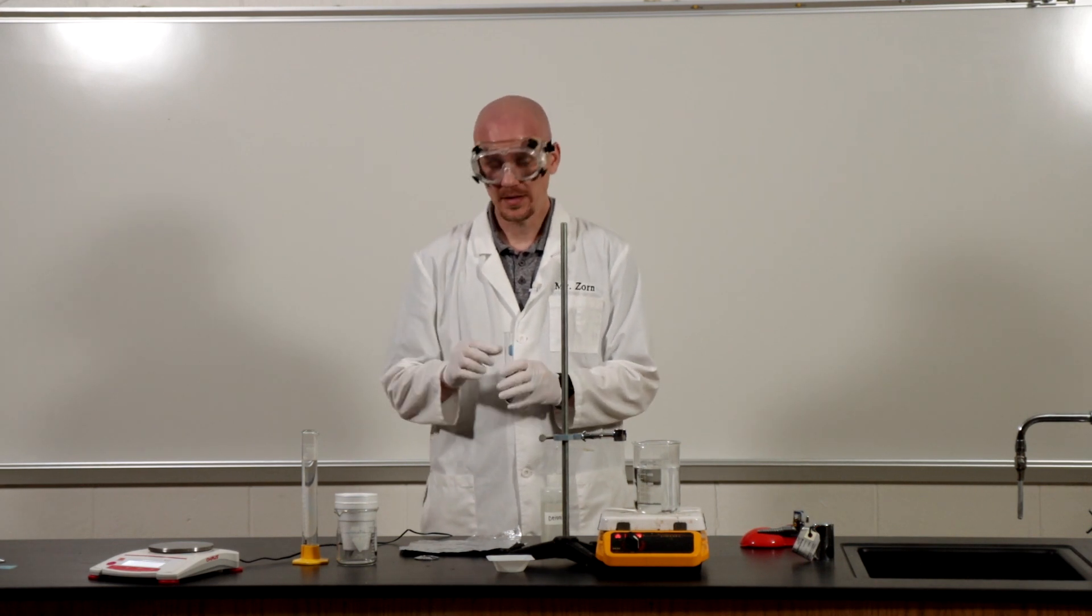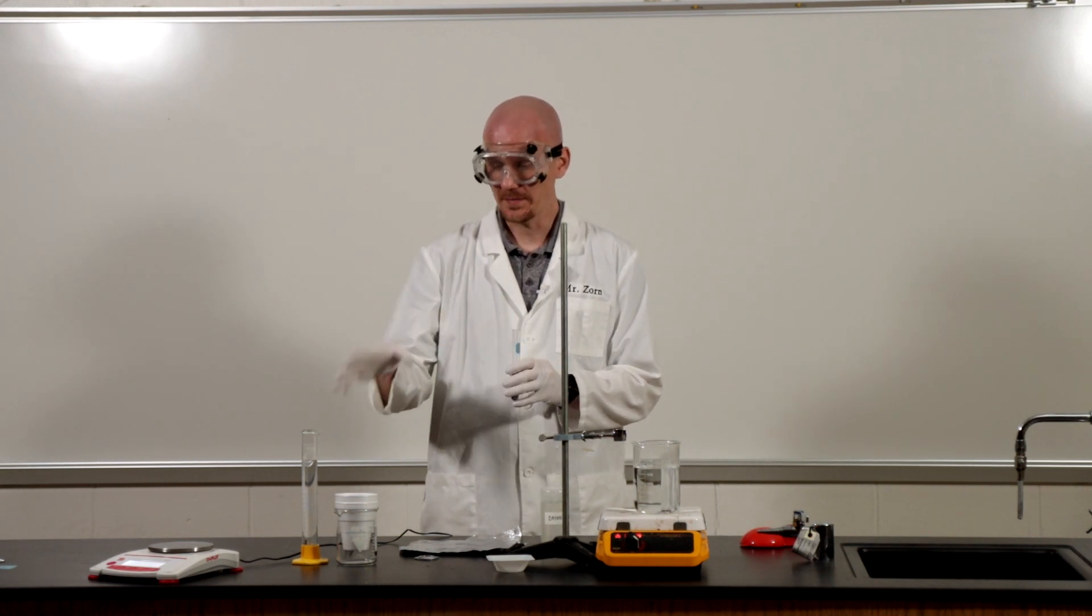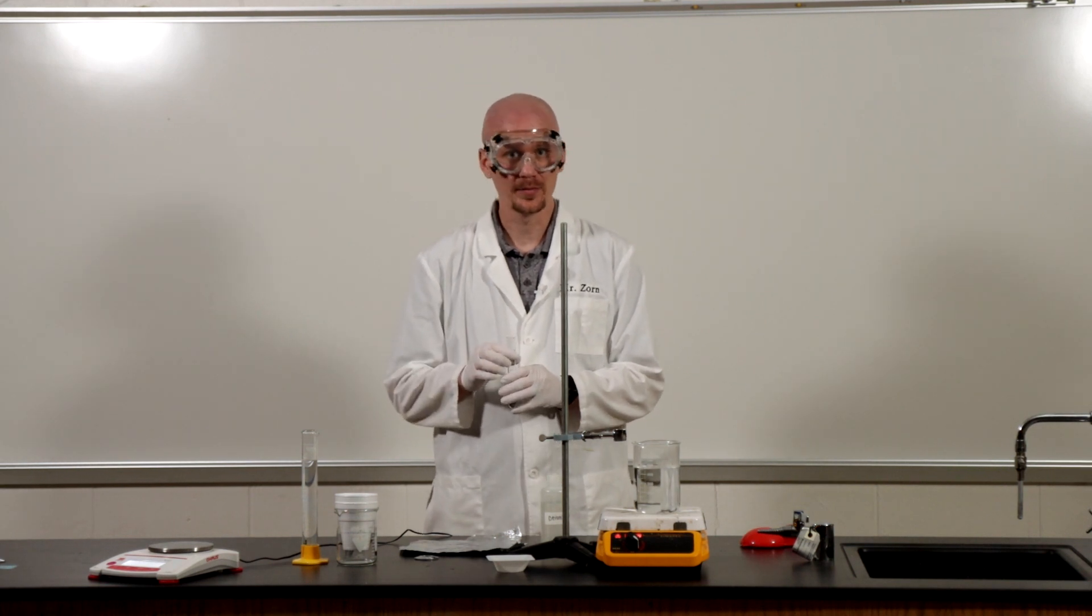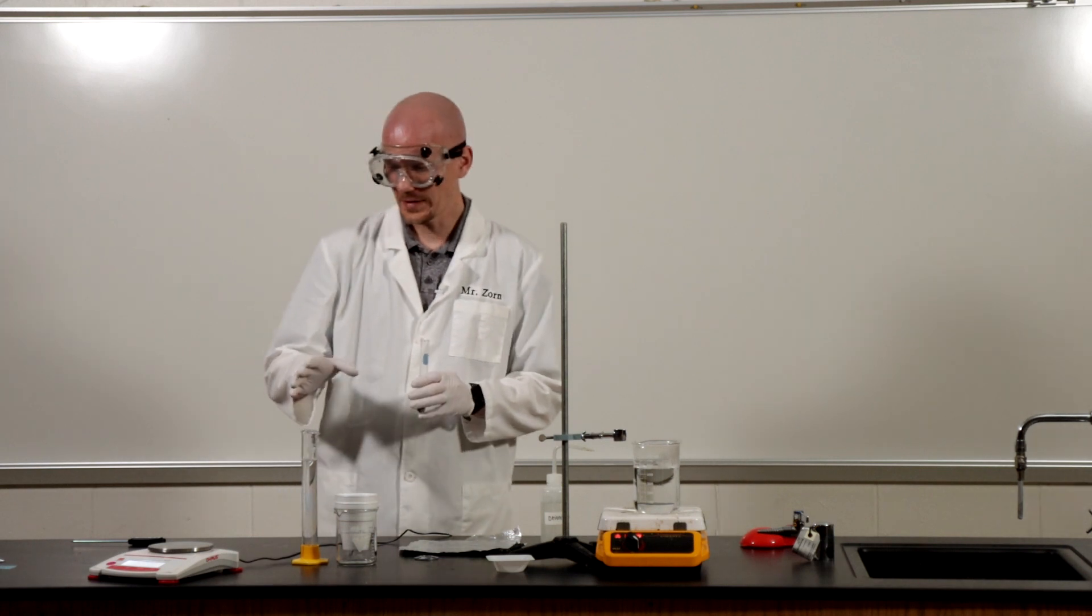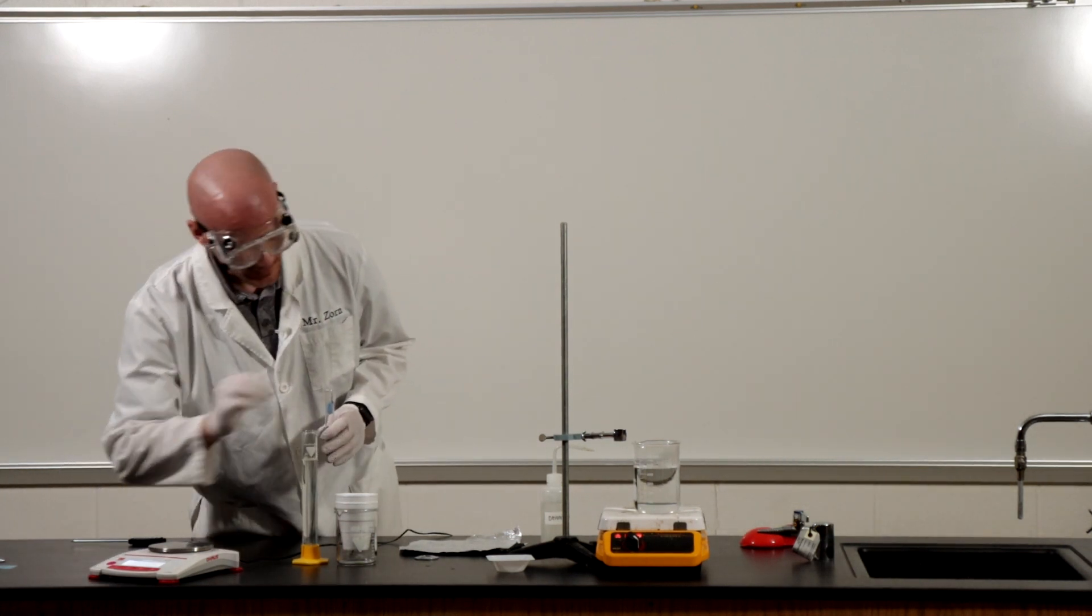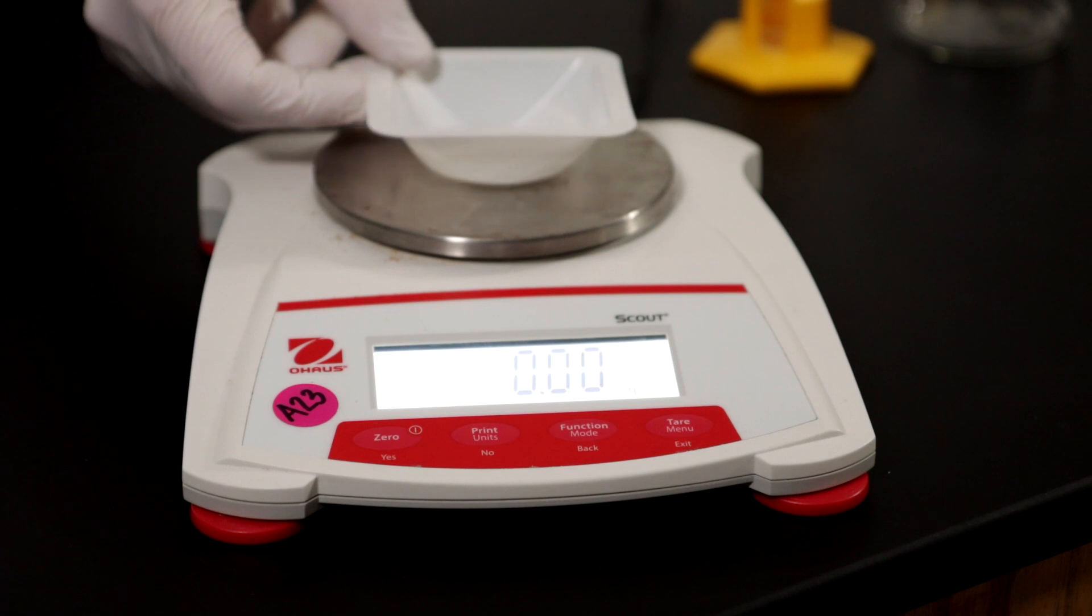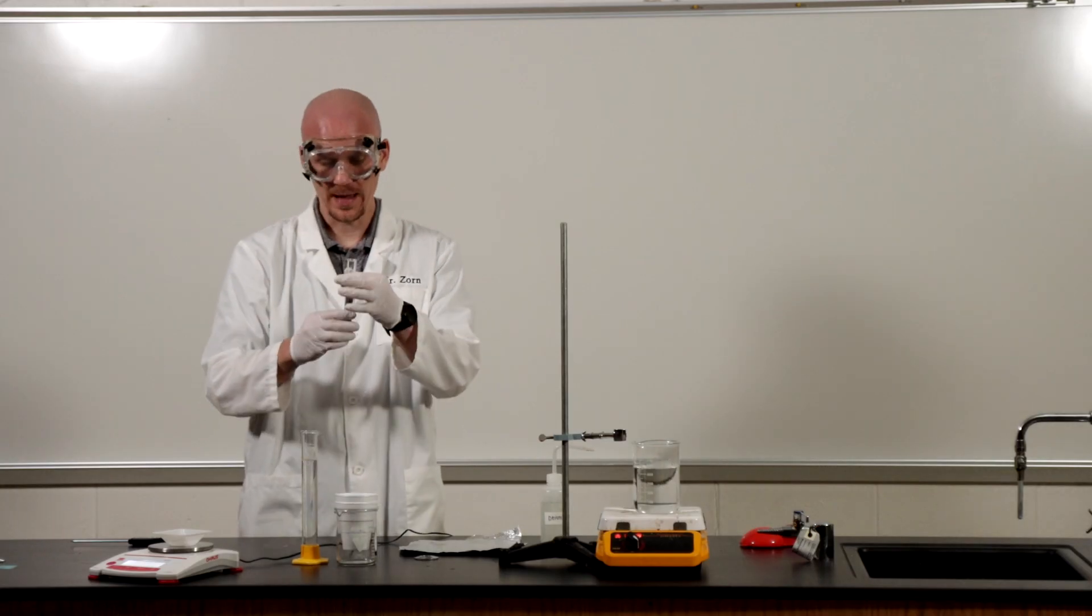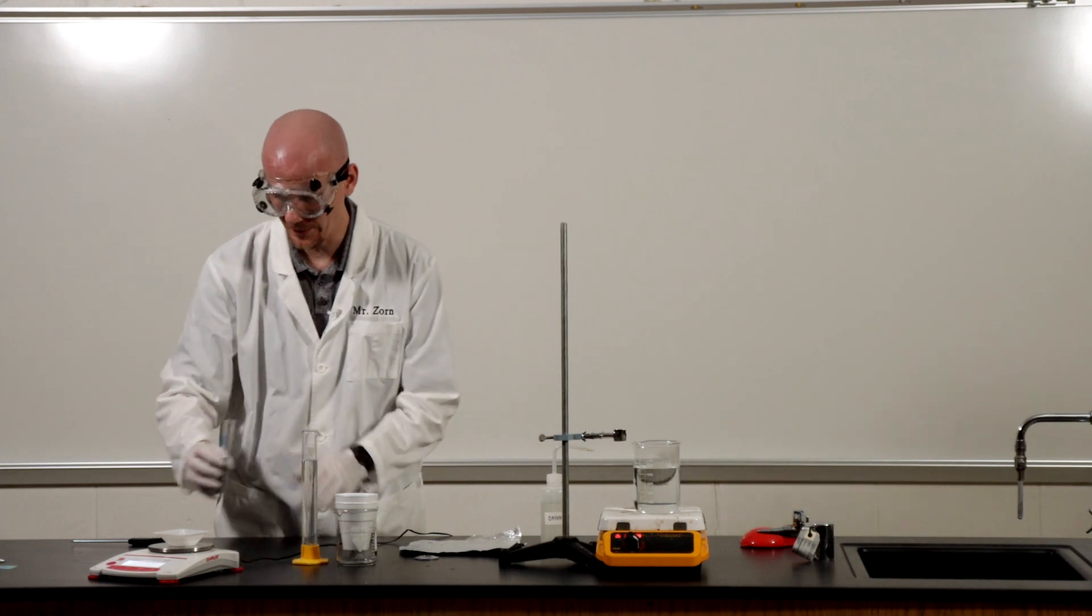So the first thing I'm going to do is I'm going to mass out this sample and then we'll talk about how the calorimeter works. First thing I'm going to do is put my weigh boat on my balance here. I'm going to zero it out and then I'm going to add all of my metal sample to the weigh boat.